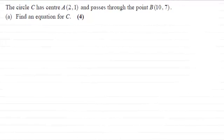Hi there. Now in the first part of this question we're told that the circle C has centre A with coordinates (2,1) and it passes through the point B with coordinates (10,7). And what we've got to do is find an equation for C for four marks.